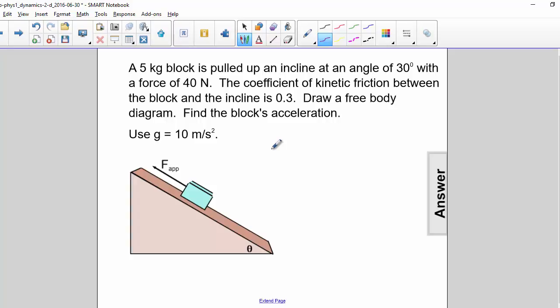A 5-kilogram block is pulled up an incline at an angle of 30 degrees with a force of 40 newtons. The coefficient of kinetic friction between the block and the incline is 0.3. Draw a free body diagram and find the block's acceleration.